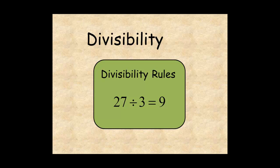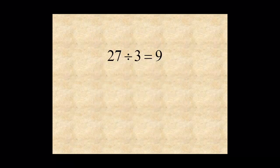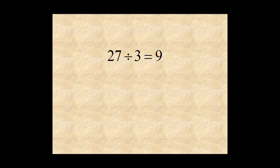This lesson helps you understand the rules of divisibility. If a number is divisible by another number with no remainder, then it's a factor. In this example, 27 is divisible by 3 with no remainder, so 3 is a factor of 27. Divisibility rules can help you find factors.